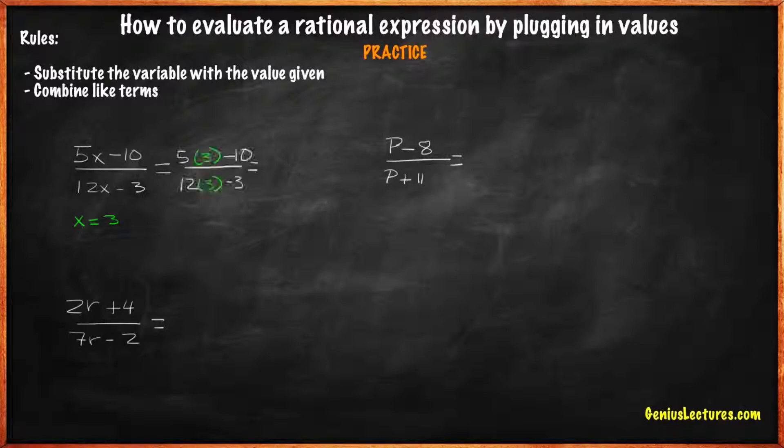5 times 3 minus 10 over 12 times 3 minus 3. 15 minus 10 over 36 minus 3. 5 over 33.